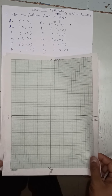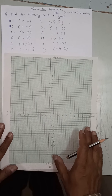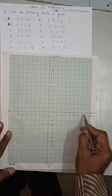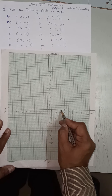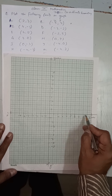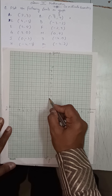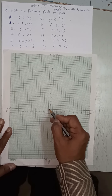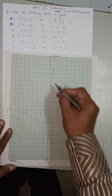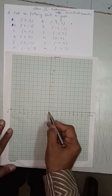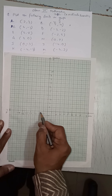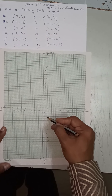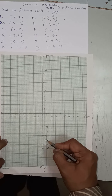After drawing the axes, we write 1, 2, 3, 4 on the positive side of x, because the right-hand side is x positive. Similarly, y is positive in the upward direction, so we write 1, 2, 3... up to 8 on both axes. X is negative on the left side: minus 1, minus 2, minus 3... minus 6. Y is negative in the downward direction: minus 1, minus 2, minus 3... minus 6.